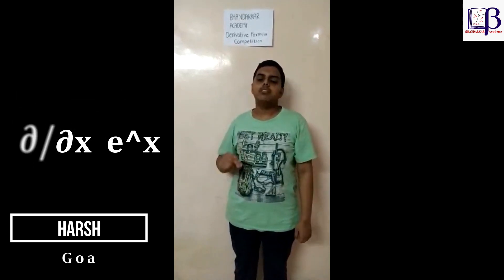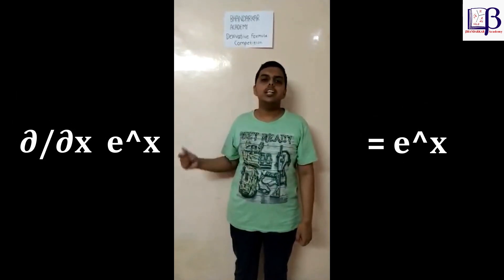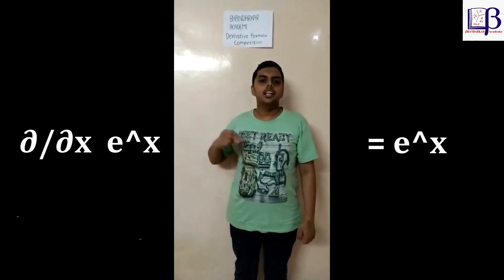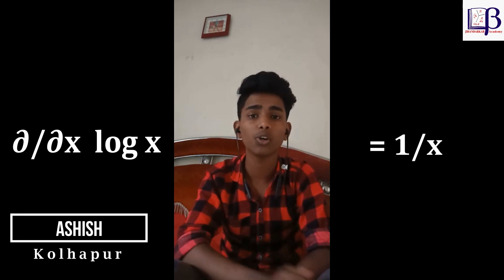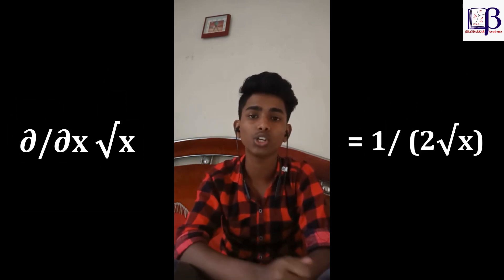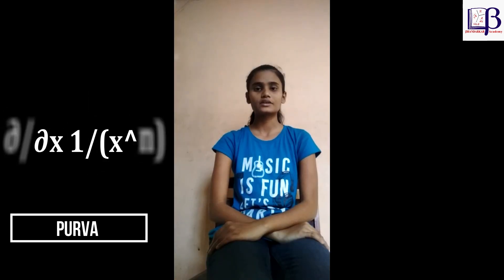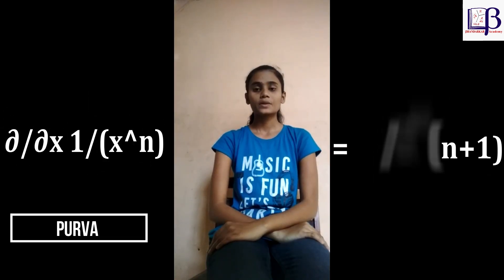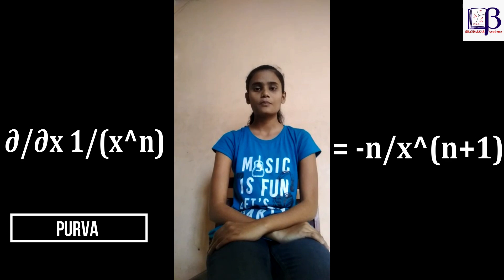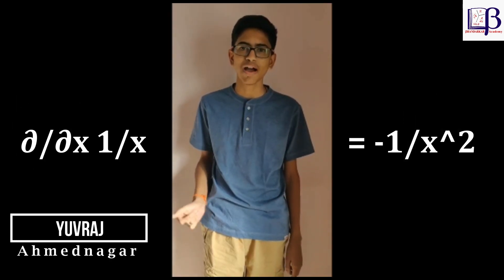d by dx of e raise to x is equal to e raise to x. d by dx of log x is equal to 1 upon x. d by dx of root x is equal to 1 upon 2 root x. d by dx of 1 upon x raise to n is equal to minus n upon x raise to n plus 1. d by dx of 1 upon x is equal to minus 1 upon x square.